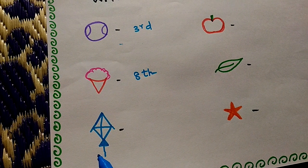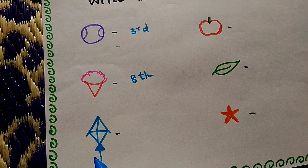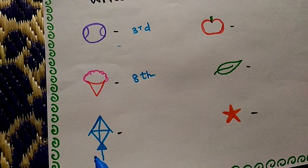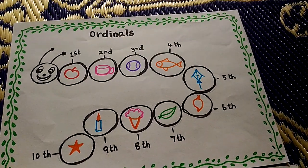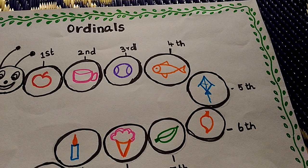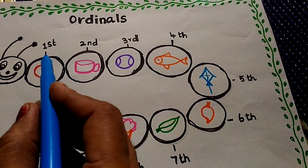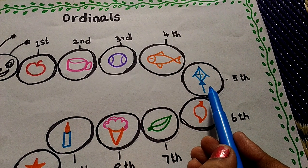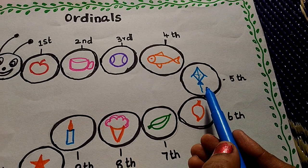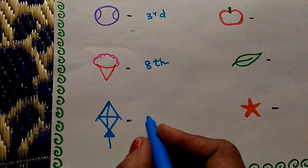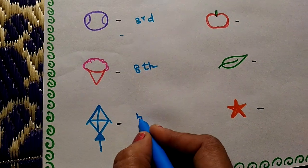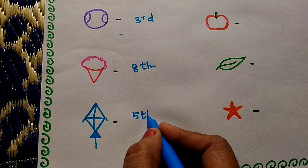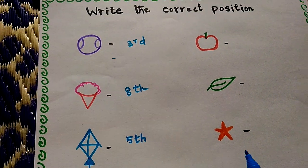Next. What is this? Kite. Which position can we find the kite? Where is kite? Here. Fifth position. See here. Fifth.